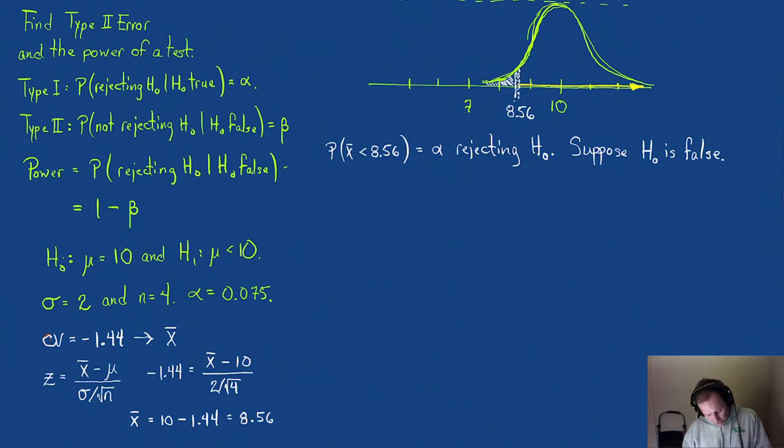Suppose our null hypothesis is in fact false, and suppose it's false and we know that mu is not 10, but it's 7. It's the same population, so we'd use our same standard deviation.